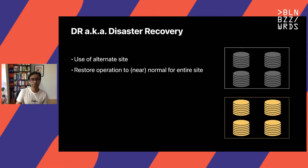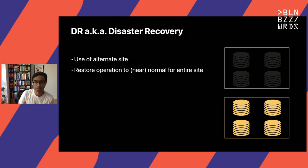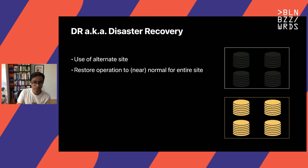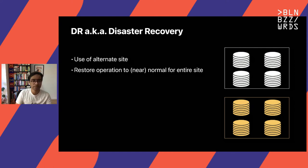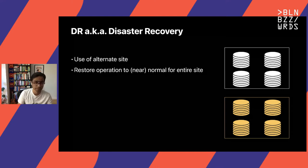Over the years, though, disaster recovery has evolved a lot. Currently, disaster recovery involves a set of policies, tools, and procedures to enable the recovery of an existing system for its continued operation. That could happen due to either a natural or a human disaster. Disaster recovery generally uses an alternate site to restore that operation for the entire site.